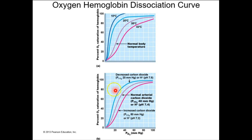Summary: under normal temperature, normal acidity, and normal carbon dioxide concentrations, you have your standard curve. A right shift represents elevated temperature, an acidic environment, or elevated carbon dioxide. A left shift means oxygen is more tightly bound to hemoglobin, and that occurs in conditions of low temperature, a basic or alkaline environment, or low carbon dioxide concentration.